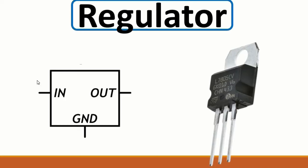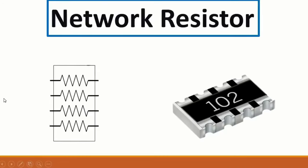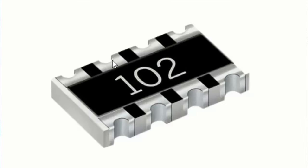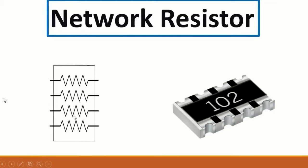For the voltage regulator, the input could be 12V and output 5V, or input 5V and output 3V. Then we have network resistors - a combination of many resistors, it could be 3, 4, 5, or more. This value indicates the resistance; for example, '102' means 1000 ohms or 1k ohm.